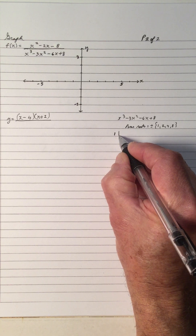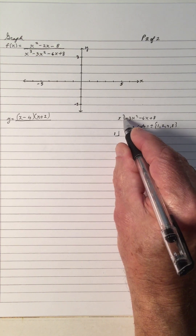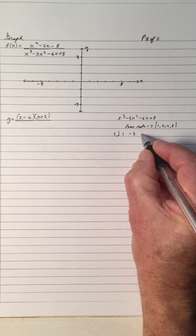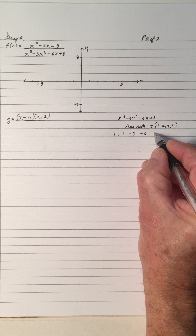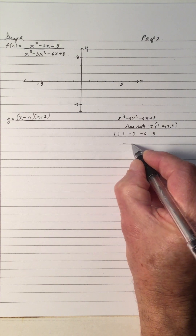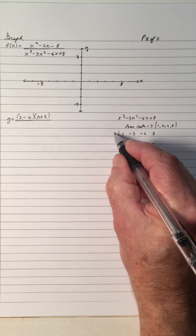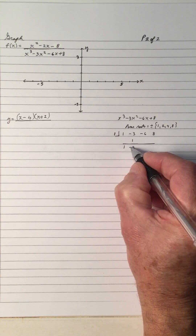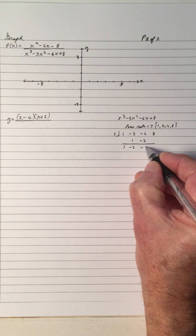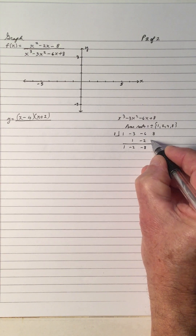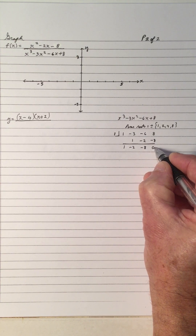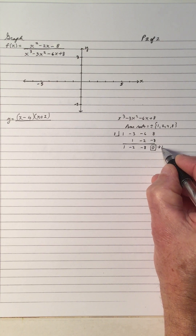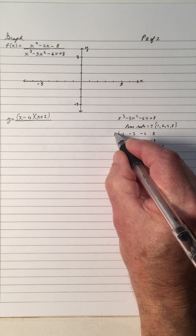So I'm going to take 1 and divide into this by synthetic division. So I've got the coefficients 1, negative 3, negative 6, 8 — they're all there in descending order. Draw a line, bring down a 1. 1 times 1 is 1, and I get negative 2. 1 times negative 2 is negative 2, and I get negative 8. 1 times negative 8 is negative 8, and I get 0. Since my remainder is 0, 1 is a root.